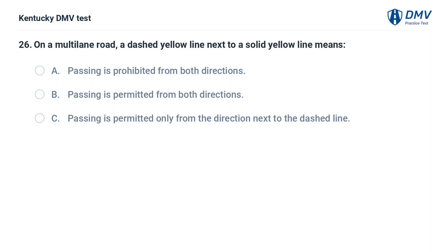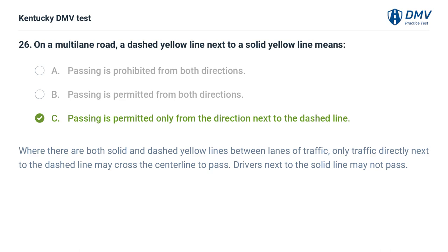On a multilane road, a dashed yellow line next to a solid yellow line means: A. Passing is prohibited from both directions. B. Passing is permitted from both directions. C. Passing is permitted only from the direction next to the dashed line. The correct answer is C. Where there are both solid and dashed yellow lines between lanes of traffic, only traffic directly next to the dashed line may cross the centerline to pass. Drivers next to the solid line may not pass.